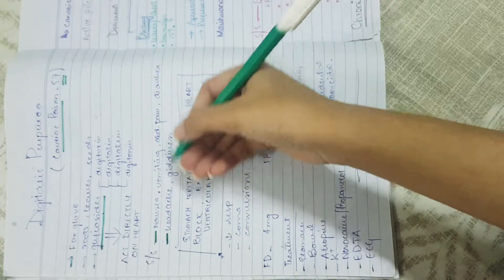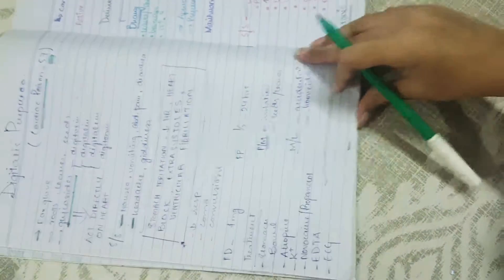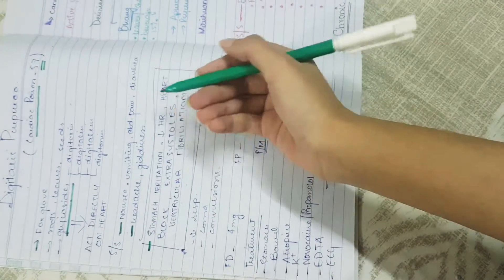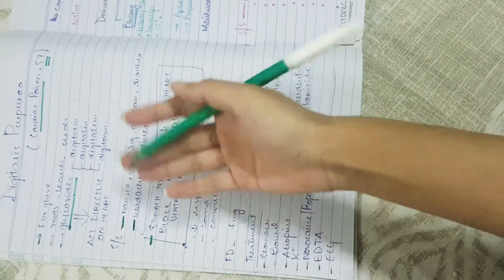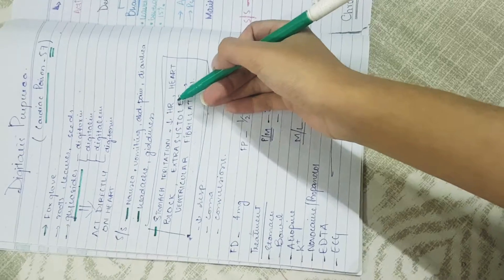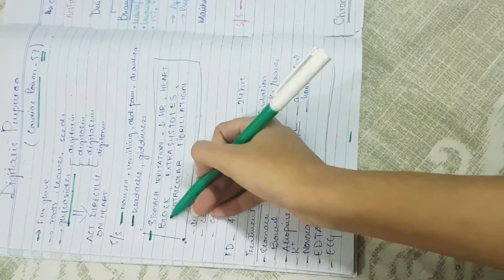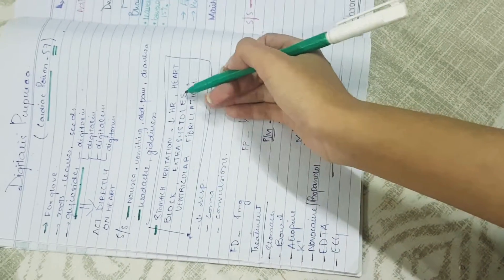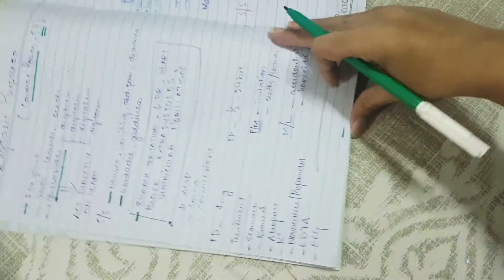The second group includes headache and giddiness. The third group contains the most specific symptoms for digitalis: stomach irritation, decreased heart rate which can lead to heart block, extra systole, and ventricular fibrillation.